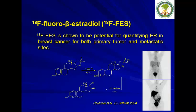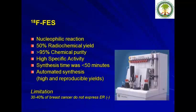Fluorobeta-estradiol (FES) has shown potential for quantifying estrogen receptors in breast cancer for both primary tumor and metastasis. Production is straightforward and can be performed using chemistry boxes, with very high yield and synthesis time of less than 50 minutes. However, it has a limitation: 30 to 40% of breast cancers do not express estrogen receptors.